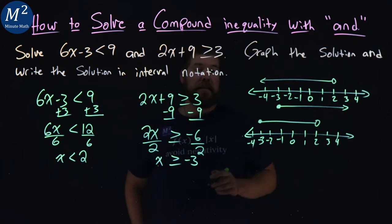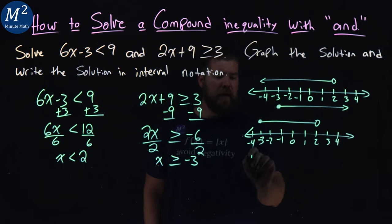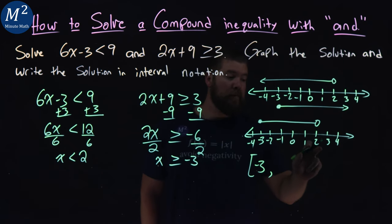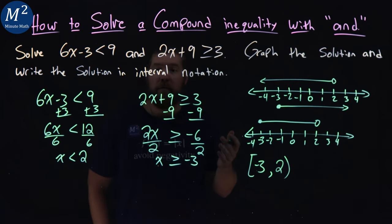So now we can write this in interval notation. We have, on the left bound, negative 3, and it can equal negative 3, so we have a bracket. It goes all the way up to positive 2, but we don't equal positive 2, so we have a parenthesis. And there we have our answer: we've graphed our inequality and written the solution in interval notation.